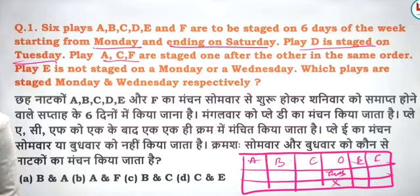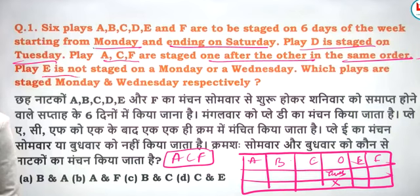A, C and F are staged one after the other in the same order — A, C and F. And E is not staged on Monday or Wednesday.